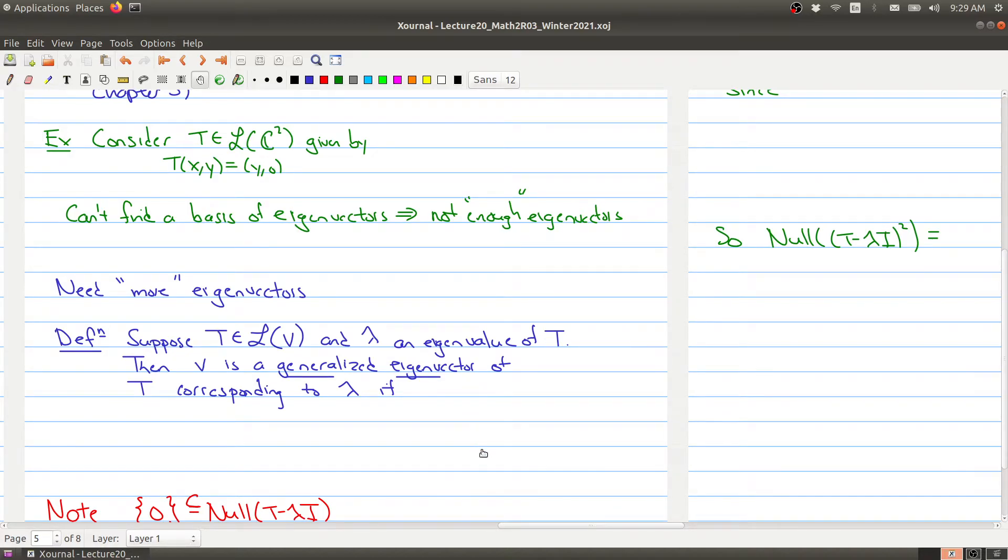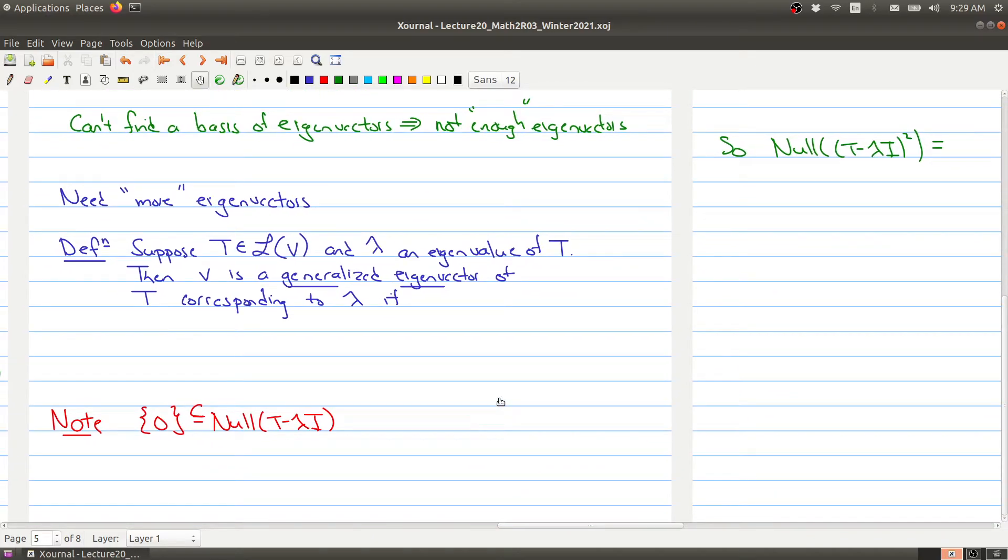To get these eigenvectors that we're missing, we're going to introduce what is called a generalized eigenvector.